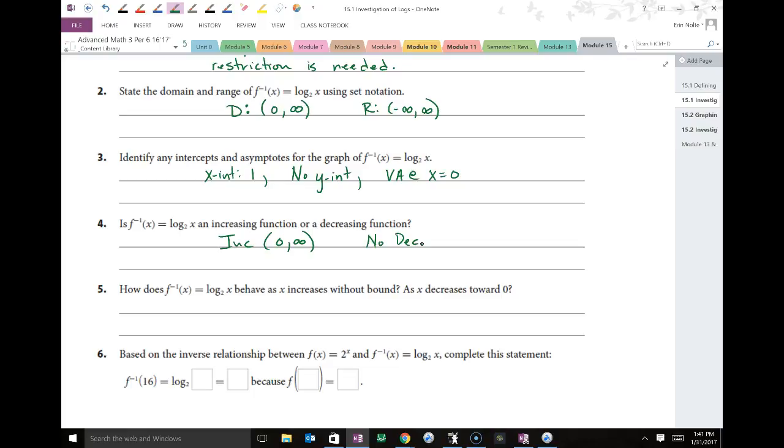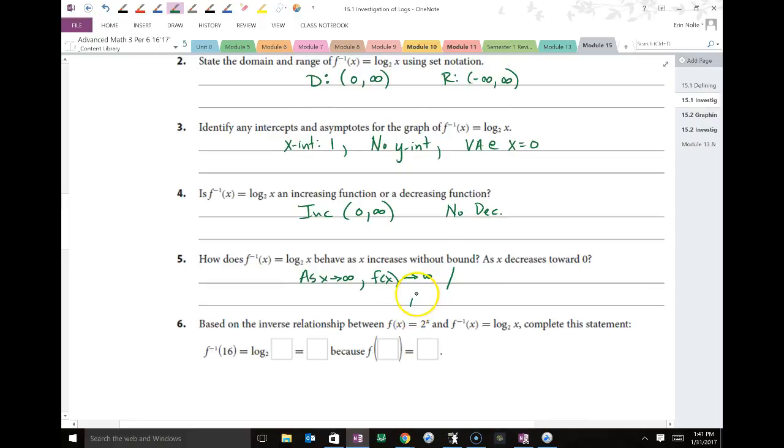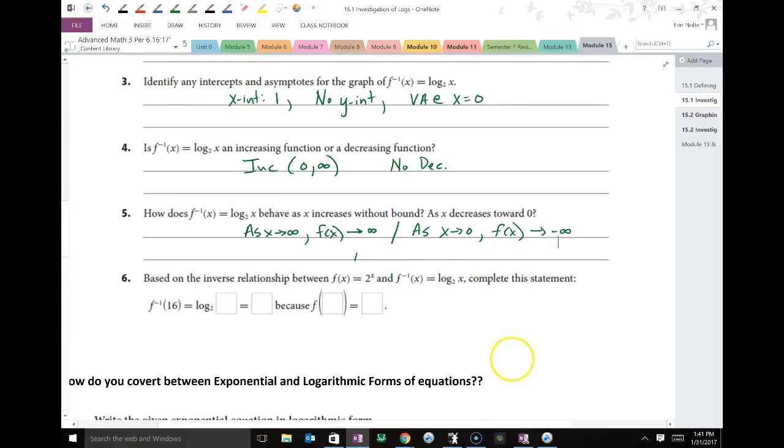Can you tell me about the end behavior? As x approaches positive infinity, what happens to my y value? Where does it go? That right hand goes to infinity. And we can't say that it goes to negative infinity because remember that horizontal asymptote that it stops at. So we're going to say as x approaches 0, what happens to my y? Goes to negative infinity. Good.